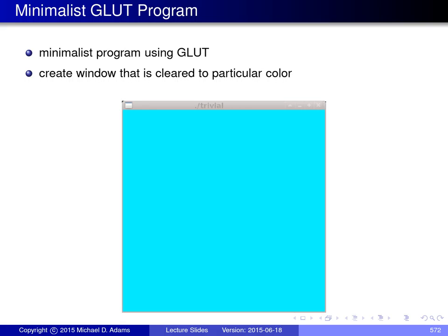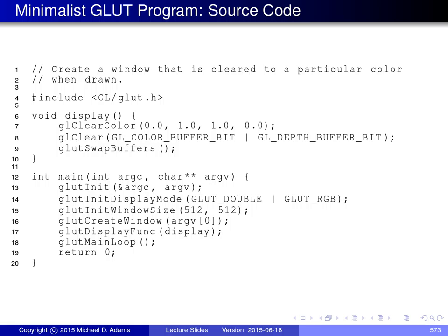We will now consider a very minimalist GLUT program. All this program does is create a window and clear it to a particular color. Looking at the main function, the very first thing it does is call glut_init to initialize the GLUT library. Once the library is initialized, we call glut_init_display_mode to establish double buffering and RGB color, meaning windows will support double buffering and we'll be drawing things in color.